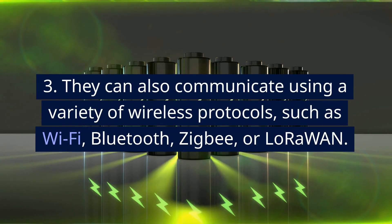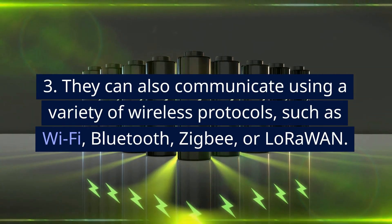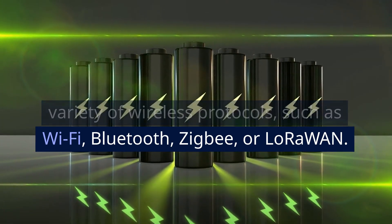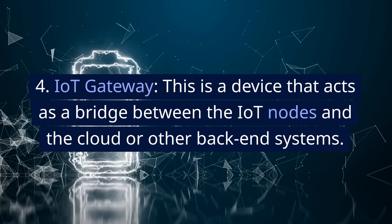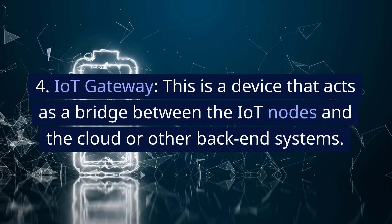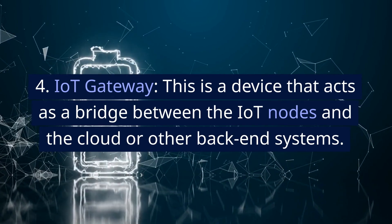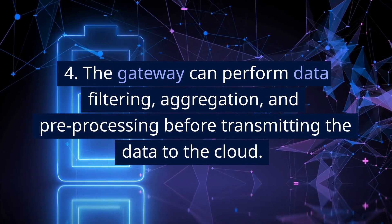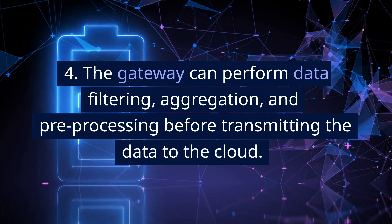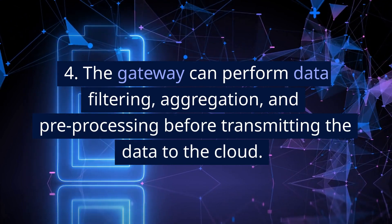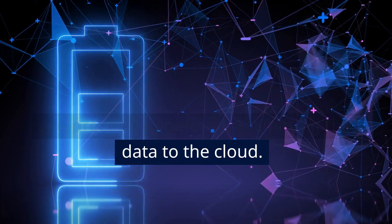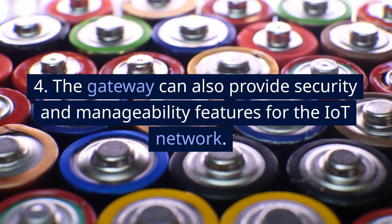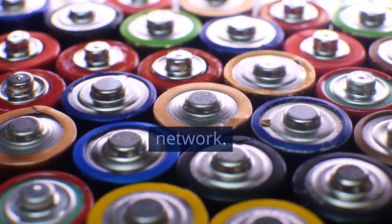IoT nodes can also communicate using a variety of wireless protocols, such as Wi-Fi, Bluetooth, ZigBee, or LoRaWAN. IoT Gateway — this is a device that acts as a bridge between the IoT nodes and the cloud or other back-end systems. The gateway can perform data filtering, aggregation, and pre-processing before transmitting the data to the cloud. It can also provide security and manageability features for the IoT network.